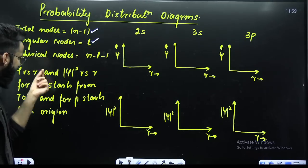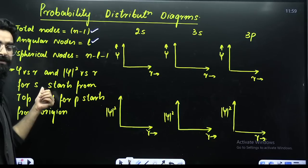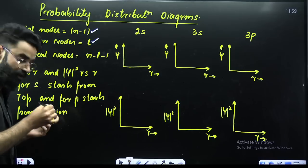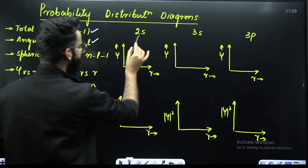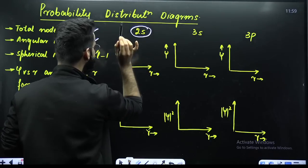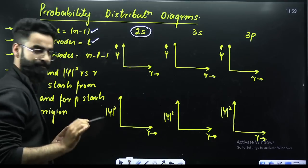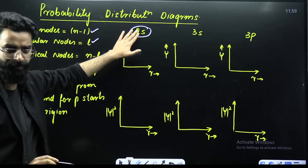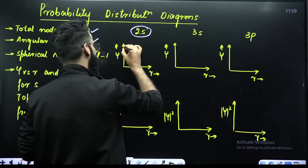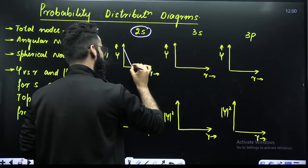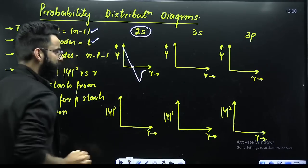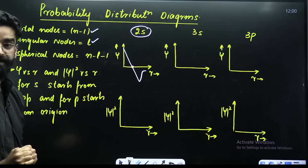For psi versus R as well as psi squared versus R, all S orbitals start from the top, then go down. In case of 2s, n value is 2 and L value is 0, so there is one total node (n minus 1 = 1). The 2s graph starts from the top, touches the R-axis, and at that point it represents the node.